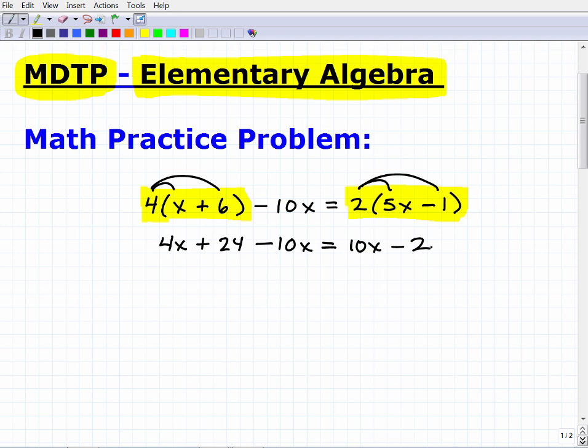Now I'm just going to continue to write this here, this minus 10x is equal to, and I'm going to do the distributive property here, 2 times 5x is 10x, and then I have 2 times this negative 1 here is going to be a negative 2. Now before you move forward with any equation, always double check your work. So I'm just going to look and see here, 4 times x, that's good, 4 times 6, 24, negative 10x, 10x, and negative 2.